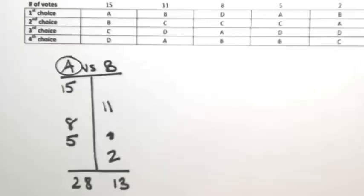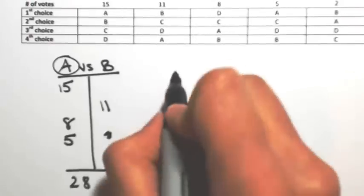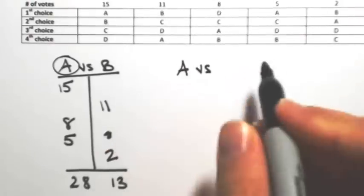So B cannot be the Condorcet winner because B has to beat all of its competitors. So there's no reason to look at B anymore. So I'm going to take A and put A against C.